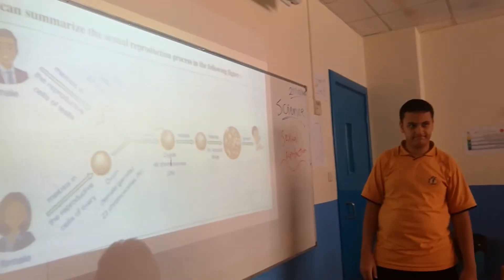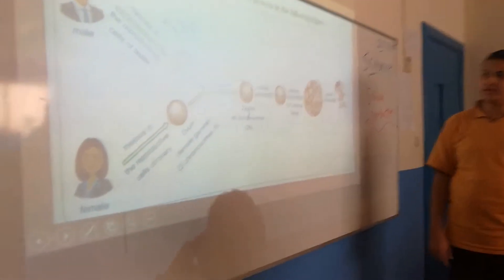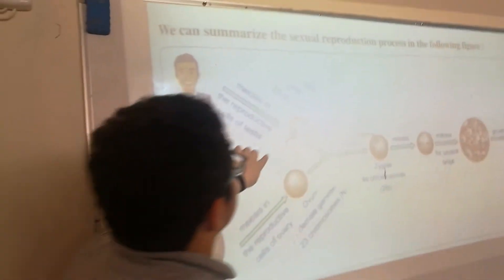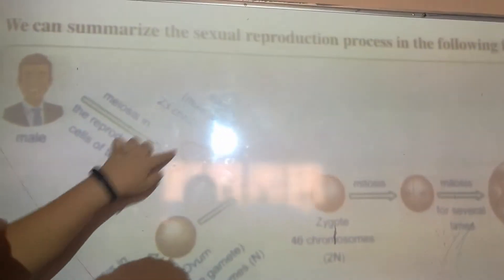The reproduction process in the following figure is... The meiosis in the productive cells in the male have 23 chromosomes and results in sperm.